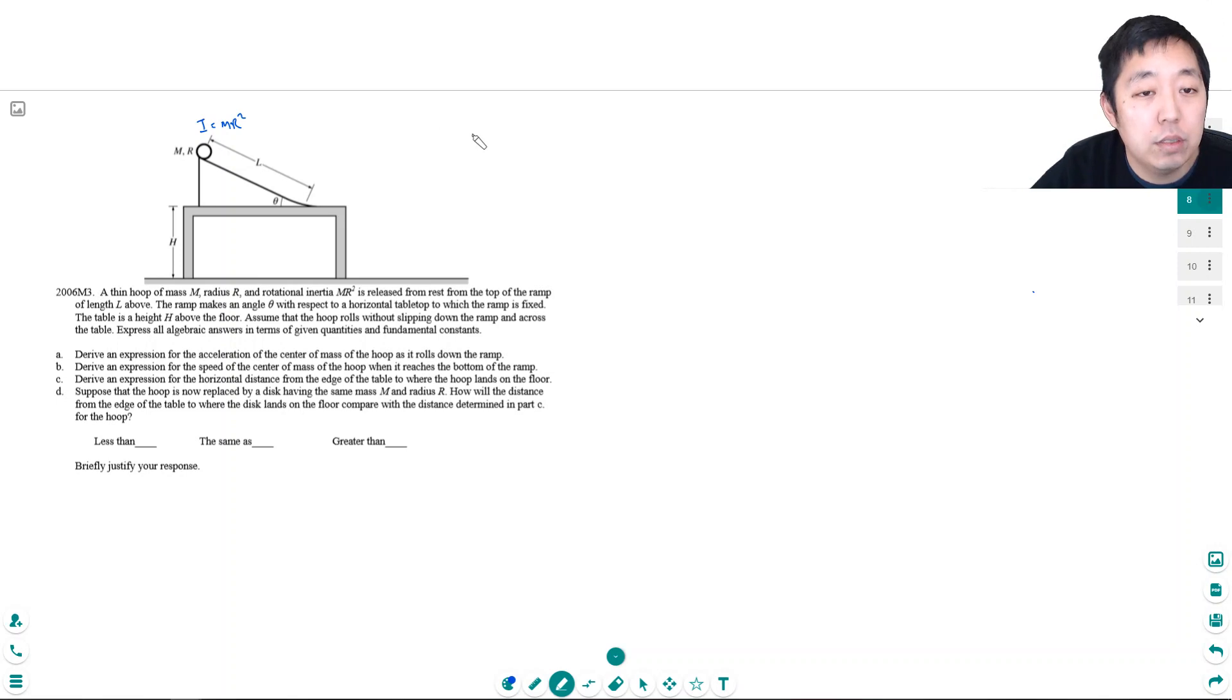Part A asks to derive an expression for the acceleration of the center of mass of the hoop as it rolls down the ramp. I'm going to do a free body diagram on the hoop. It has gravity going down, a normal force, and it does have a slight amount of friction. This is similar to the setup when you do a rolling problem - this is the general setup for the free body diagram.